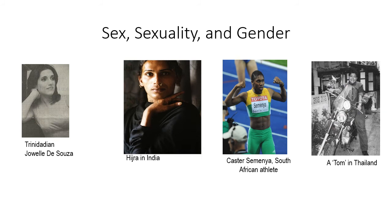Let's transition into talking about sex, sexuality, and gender — they are different things. Some of the images here are interesting, mostly relating to transgender things, like the Taam in Thailand, who are women that dress as men. And there's Caster Semenya, who by all external appearances is female but is likely XXY or one of the other genetic variations, and therefore has the genetics for masculinity and maleness internally but female externally.